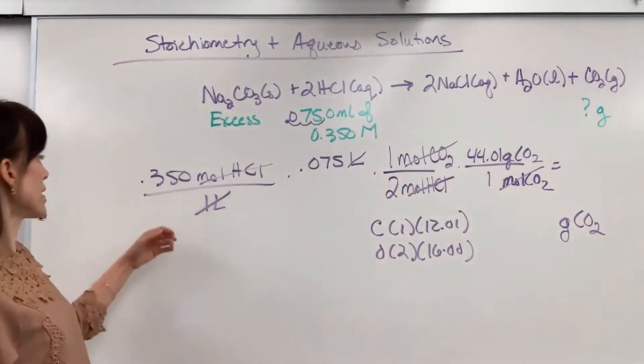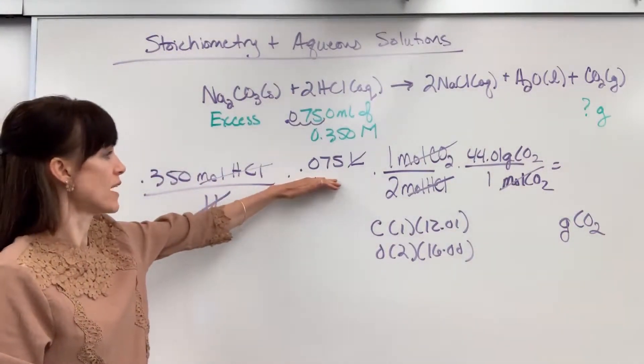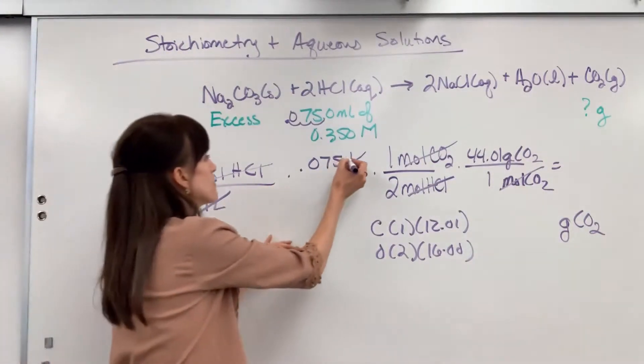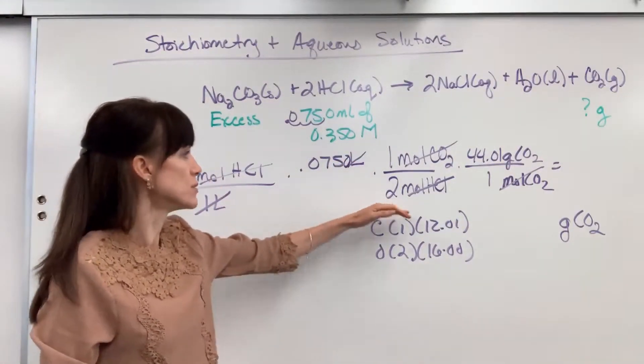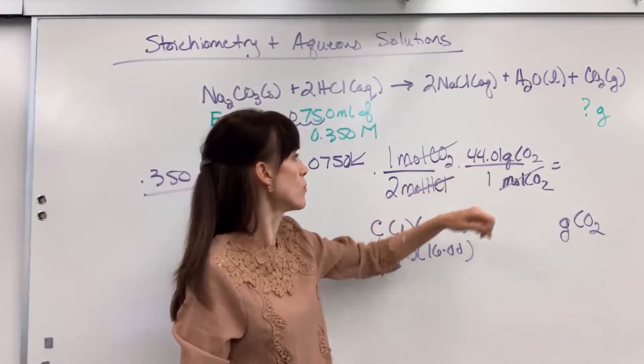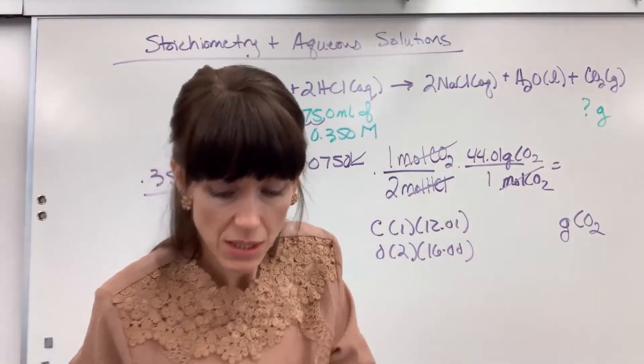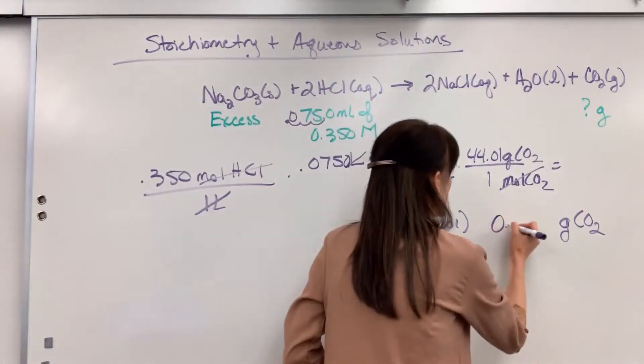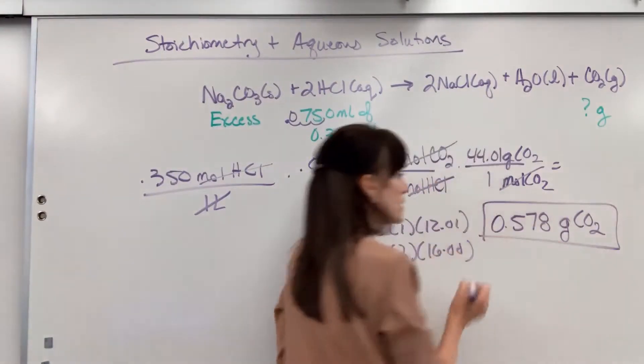So to put this in your calculator, 0.350 times 0.075. Oh, and there's a zero after that. Sorry. Three sig figs. Divided by two times 44.01. We're going to have three sig figs. And the answer for this is 0.578 grams of CO2.